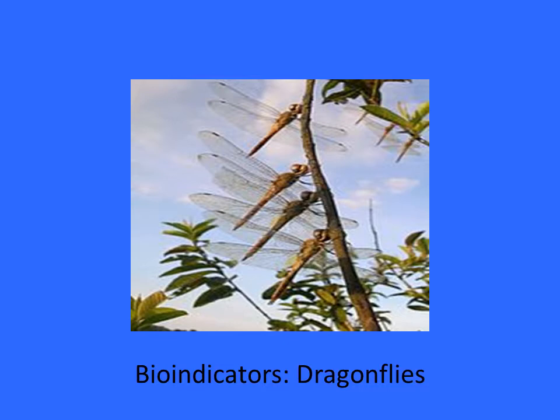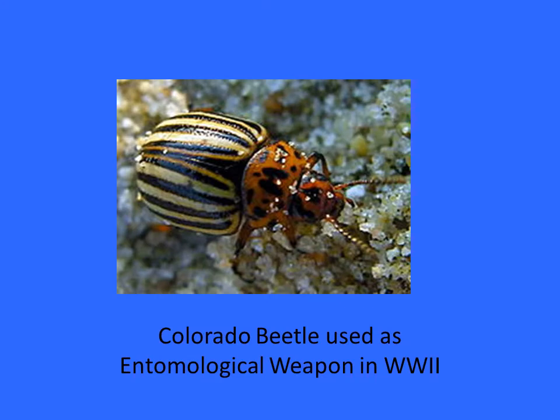The Colorado beetle has been used as an entomological weapon in World War II. This insect is a pest that eats and destroys mainly the potato crop. Since potato is the staple food of Europeans, the potato crop was completely damaged, causing starvation. This is an example of an entomological weapon. These are certain important roles of insects in the ecosystem.